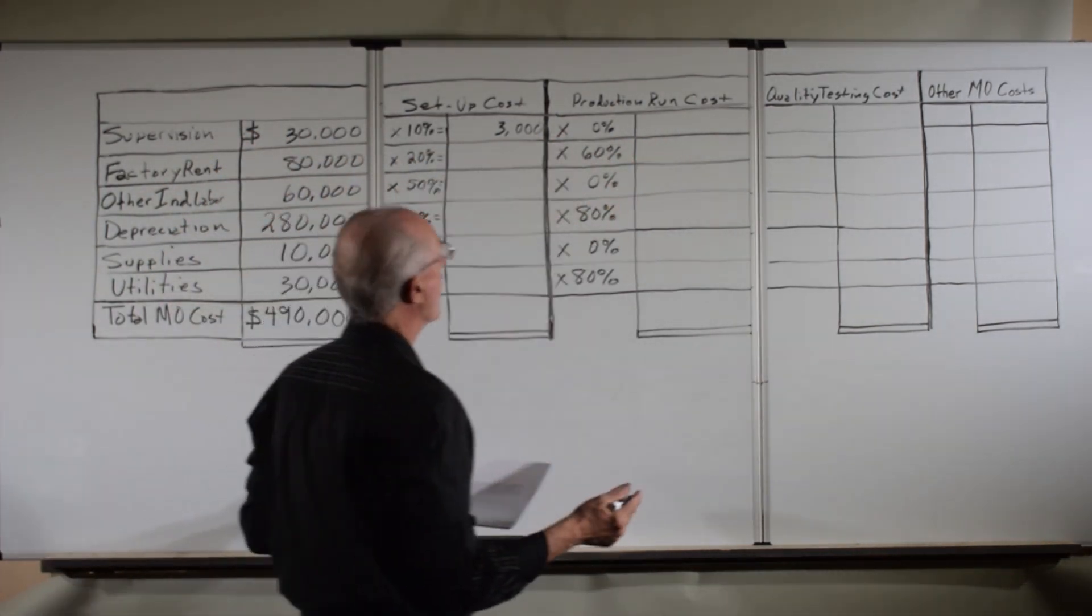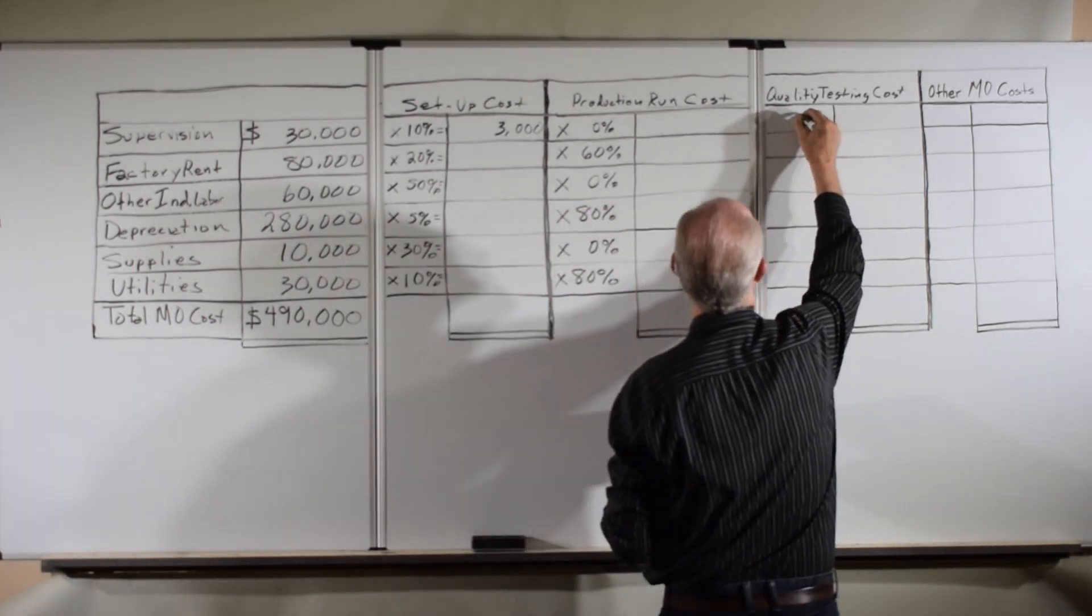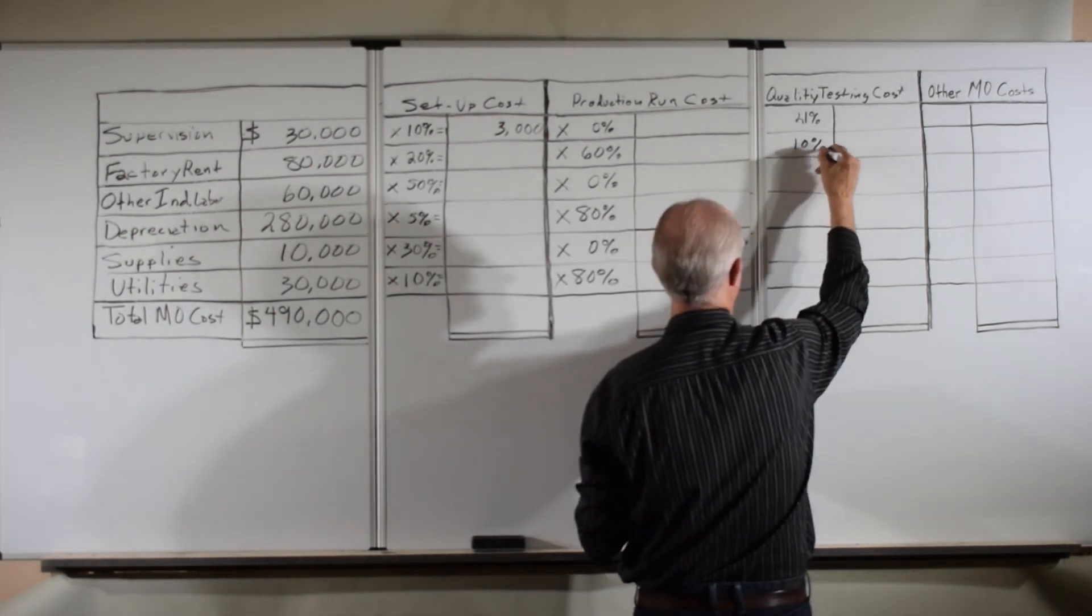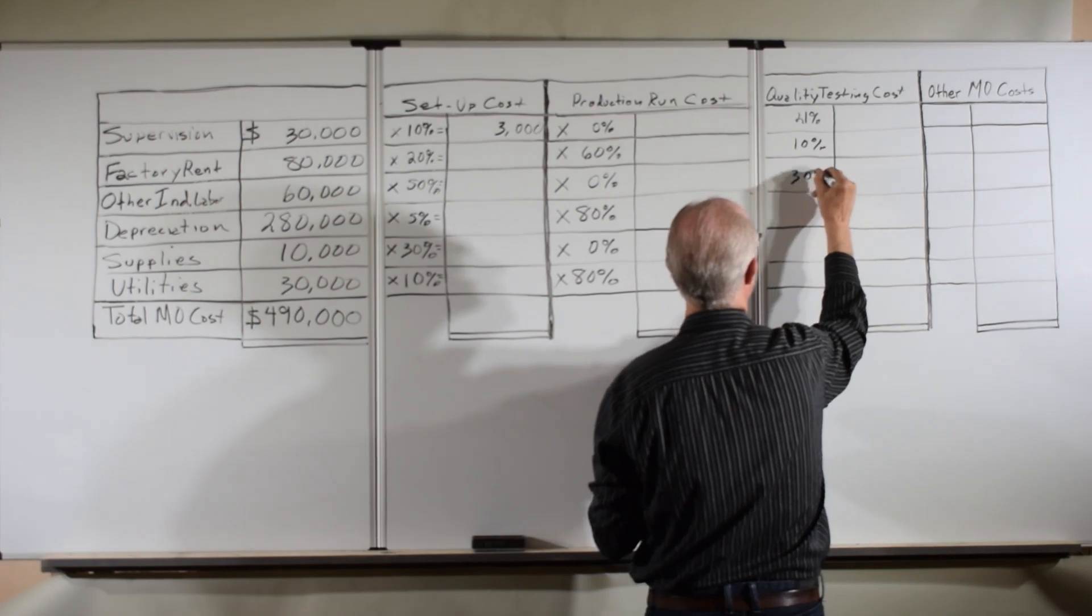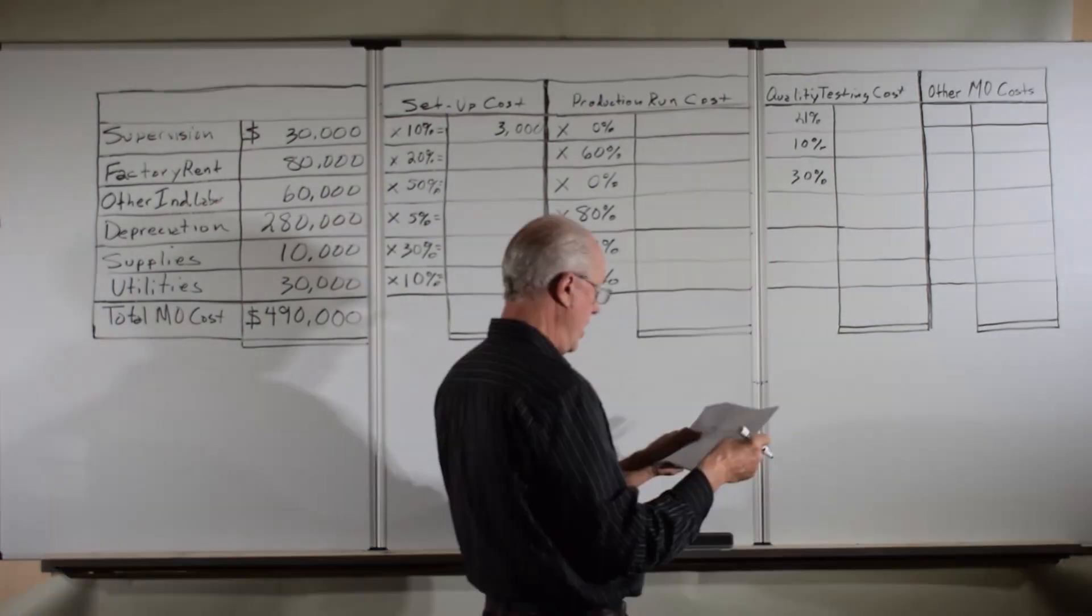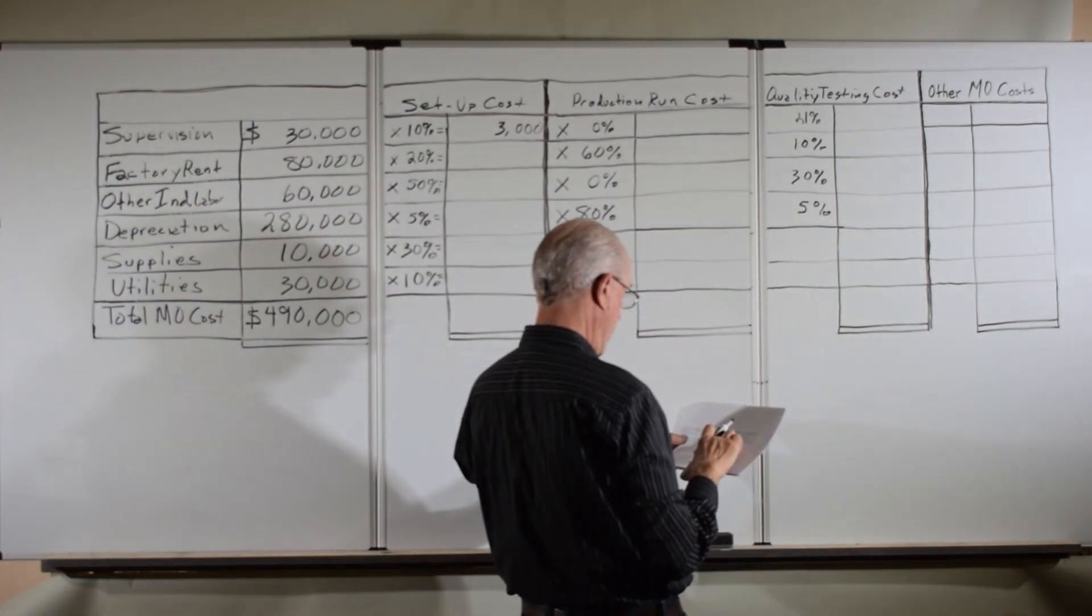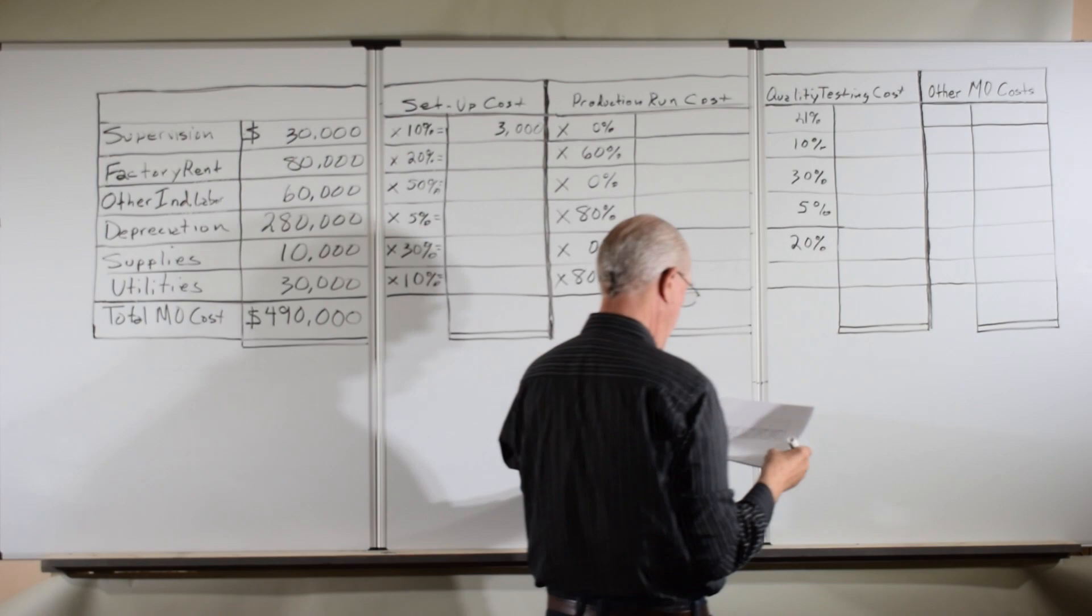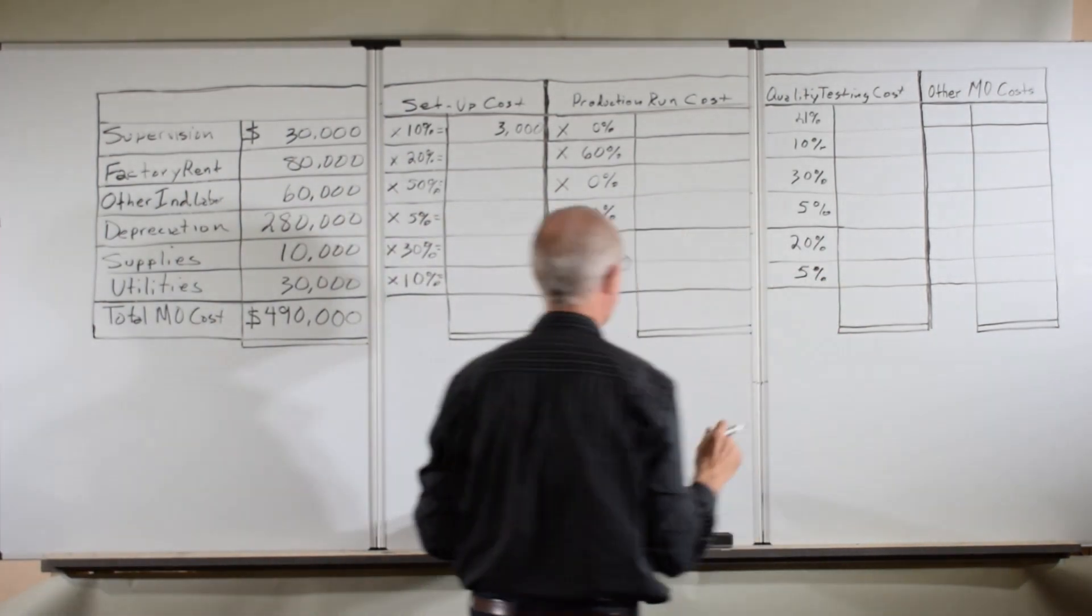Now let's go to quality testing. Quality testing is using 21% of the supervision, 10% of the factory rent, 30% of the other indirect labor, 5% of the depreciation, 20% of the supplies, and 5% of the utilities.